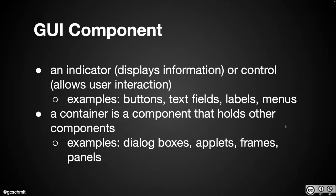A component in our graphical user interface is either an indicator, meaning it's displaying some sort of information, or it's a control, which means it allows some sort of user interaction. A button is a component — it allows a user to click on it, that's a control. A text field displays some text on the screen, so that's more of an indicator, though it also allows a user to type text in, making it a control. Labels are indicators. Menus are controls — they allow a user to select an option.